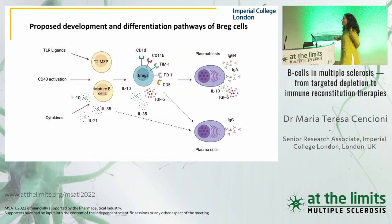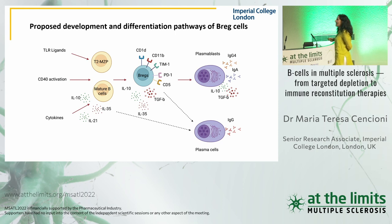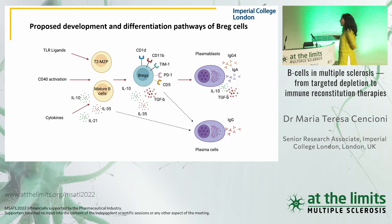We don't know the full commitment of Bregs, because unlike Tregs, we don't have a defining transcription factor. What we know is that differentiation starts from immature B cells upon different types of stimulation, like BCR receptor stimulation or CD40 stimulation. When they become Bregs, they are able to release anti-inflammatory cytokines. We also know from the literature that Bregs can differentiate into plasmablasts and plasma cells that maintain regulatory B cell function.